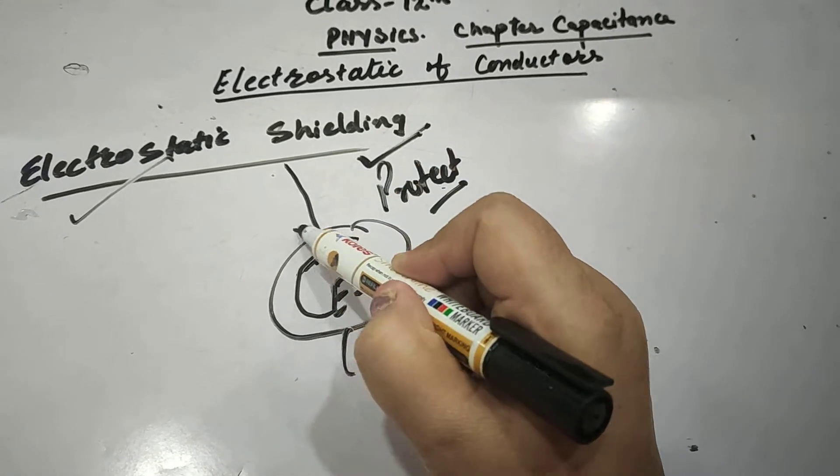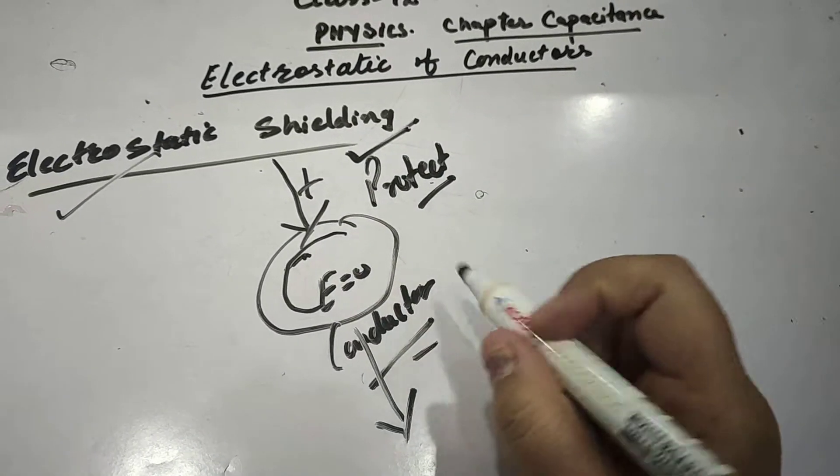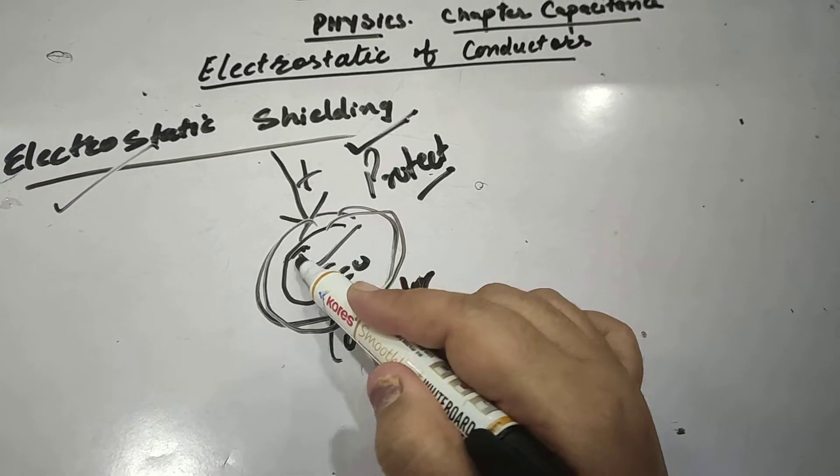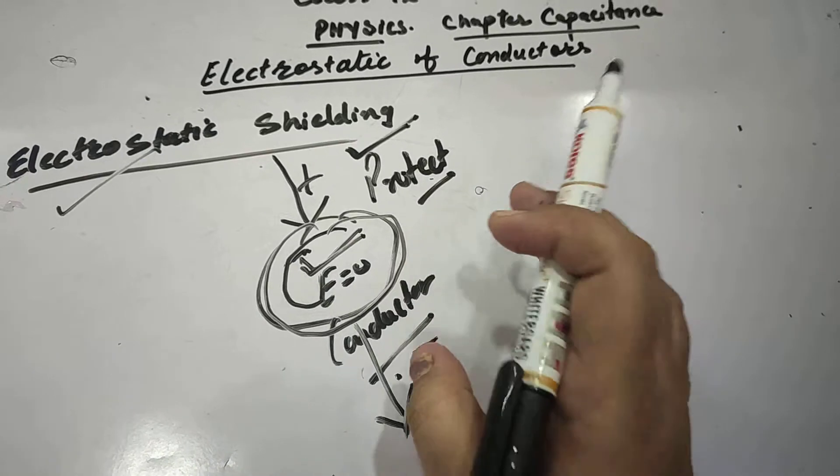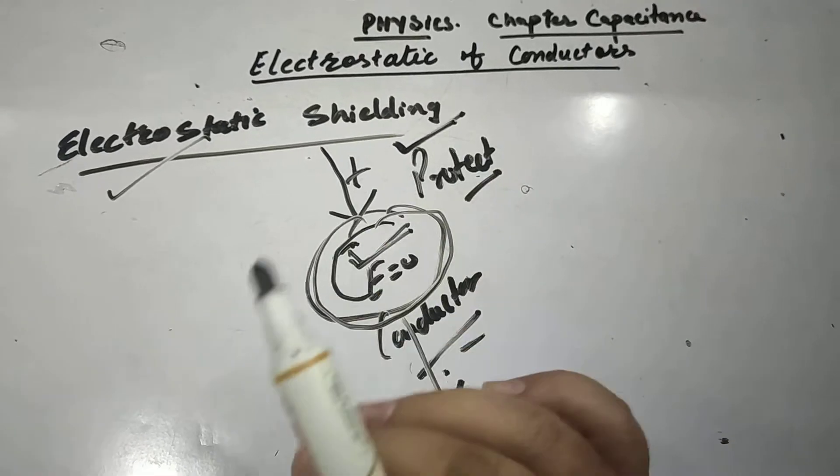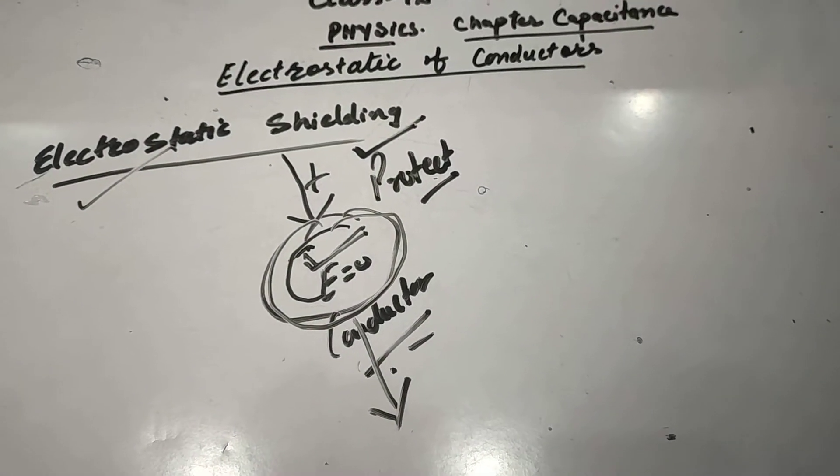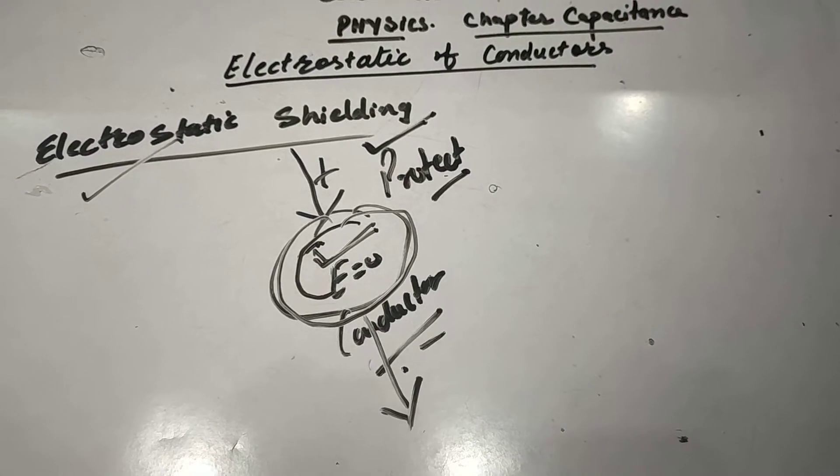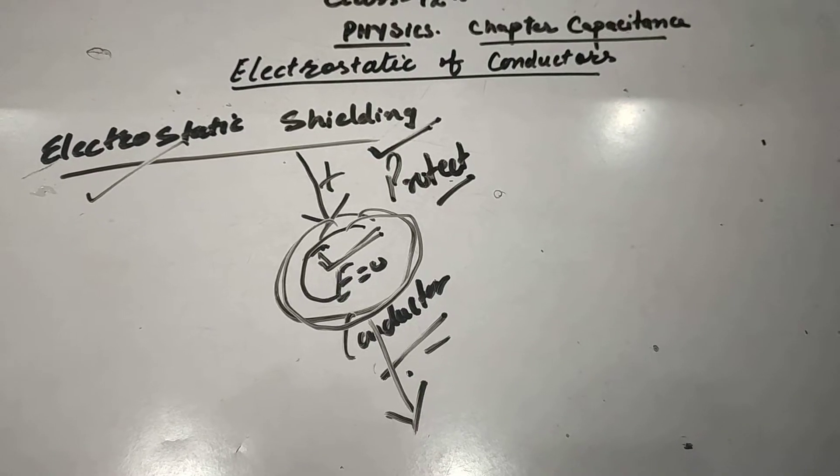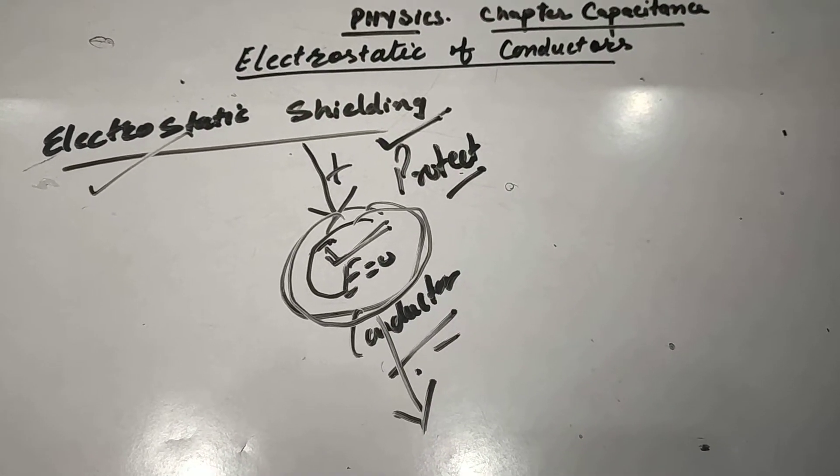Even if external electric field is applied, since inside the conductor there is no electric field, the thing which we have kept inside the conductor will remain protected. For example, in rainy weather it is better to be inside a car than to be under a tree when it is lightning outside. Why is this so? Because...